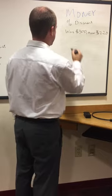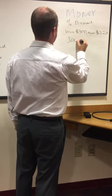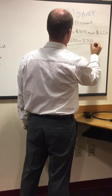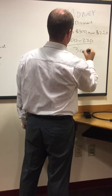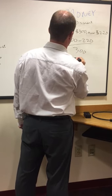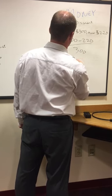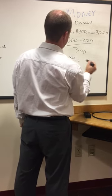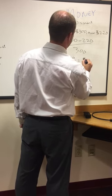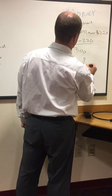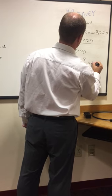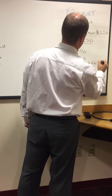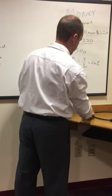So you have 300 minus 220, all over 300. That's 80 over 300. You can also reduce that to 8 over 30, and that equals approximately 26%.